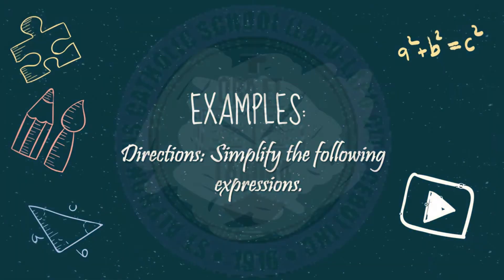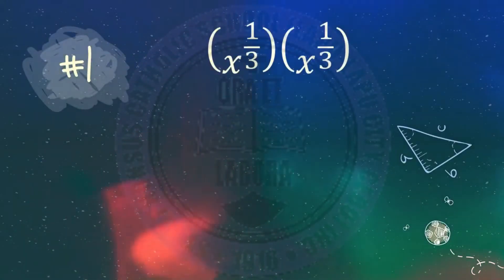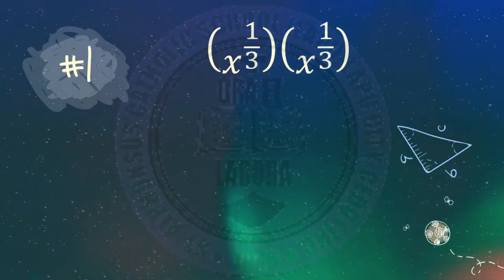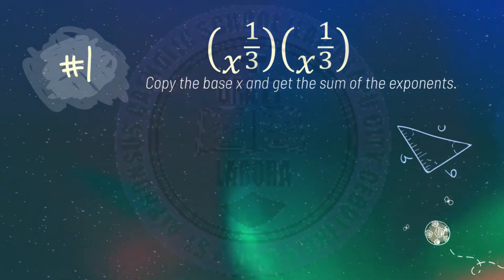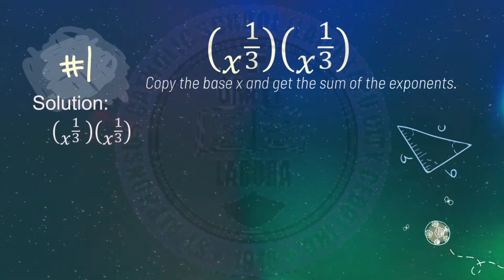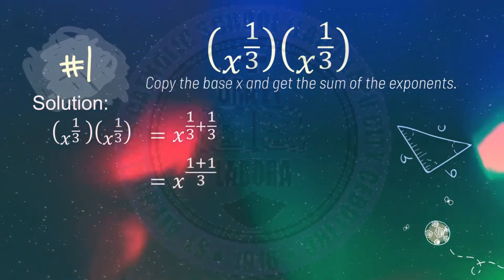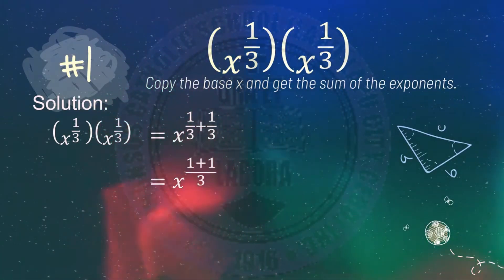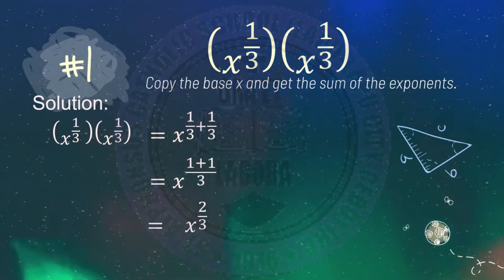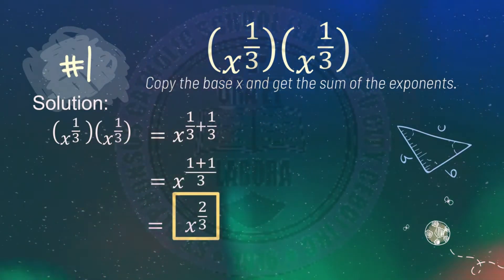Let's have some examples in simplifying the following expressions. Number one: x raised to 1 third times x raised to 1 third. All you need to do is copy the base x and get the sum of the exponents. So 1 third plus 1 third equals 1 plus 1 over 3, which is 2 over 3. So the answer is x raised to 2 thirds.